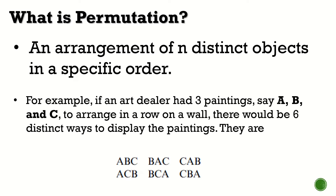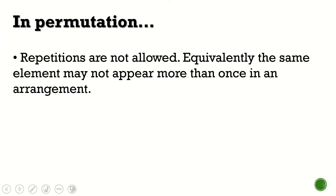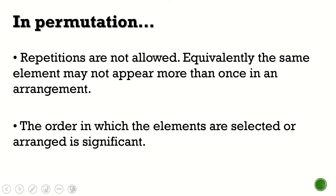Of course, we don't need to do this in all of the problems. That's why later on, I'm going to teach you how to do that. In permutation, we need to remember these two things. Number one, repetitions are not allowed — the same element may not appear more than once in an arrangement. The second is the order in which the elements are selected or arranged is significant.